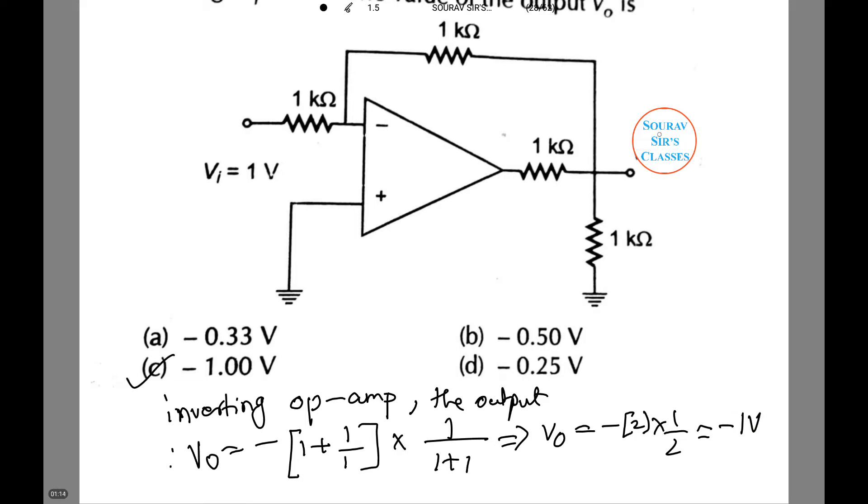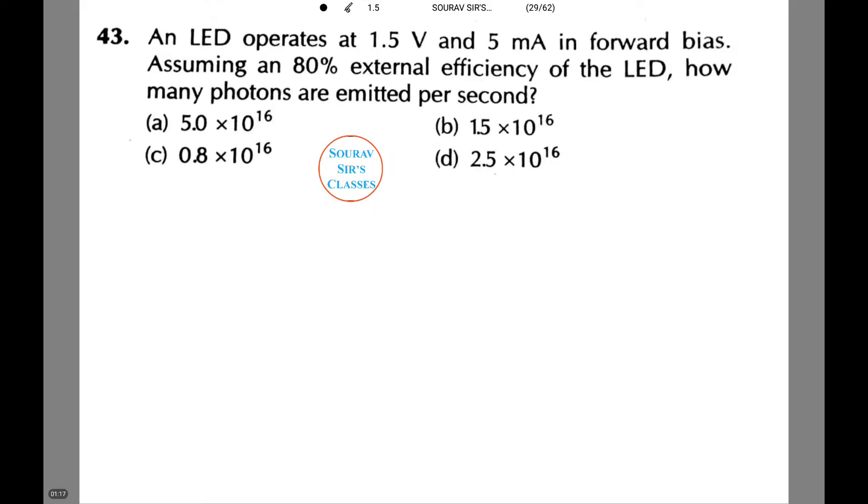Moving on to the next question. Now an LED operates at 1.5 volt and 5 mA in forward bias. Assuming 80% external efficiency of the LED, how many photons are emitted per second?